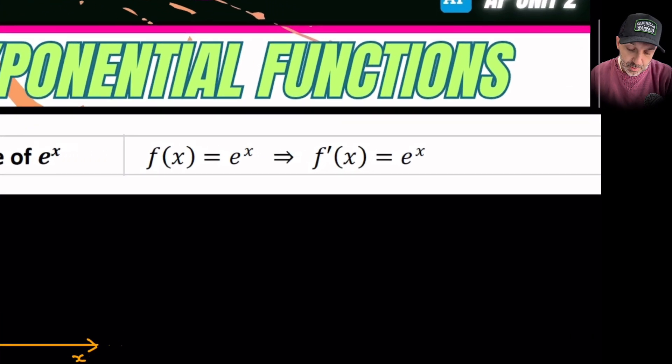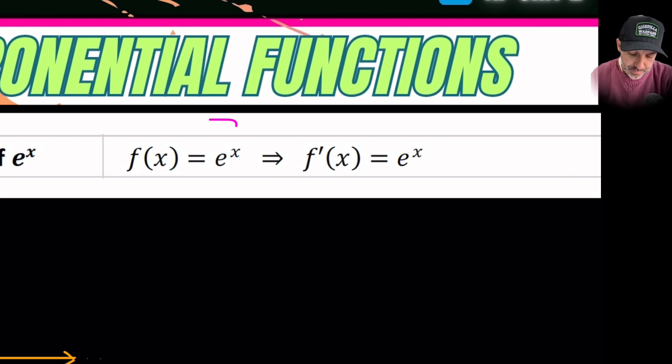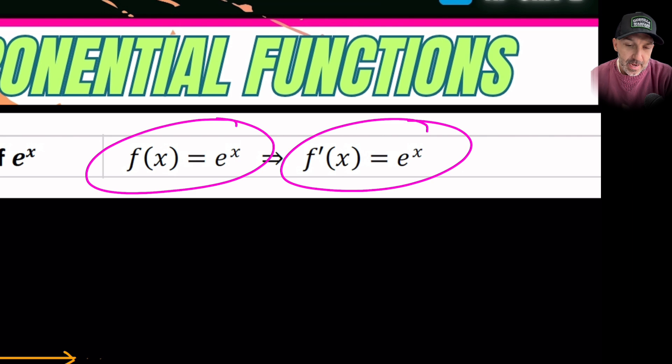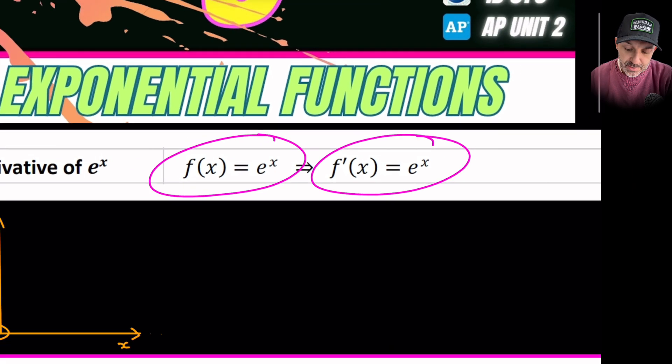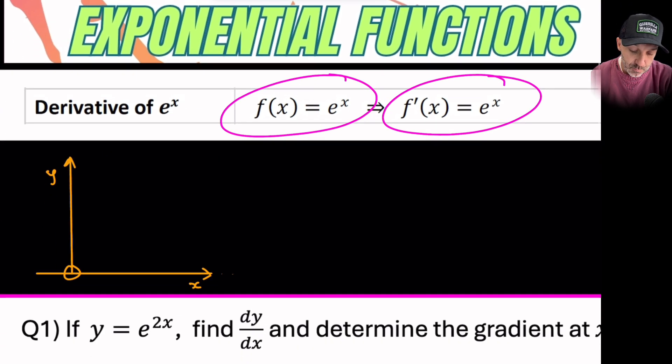So in the formula booklet for IB it does state that the derivative of e^x is simply just e^x. Now that is helpful to some extent, but not when the e^x becomes like e^(2x) or e^(2x+1) or something like that. That is a little bit different. So we'll just come back to that in one moment.